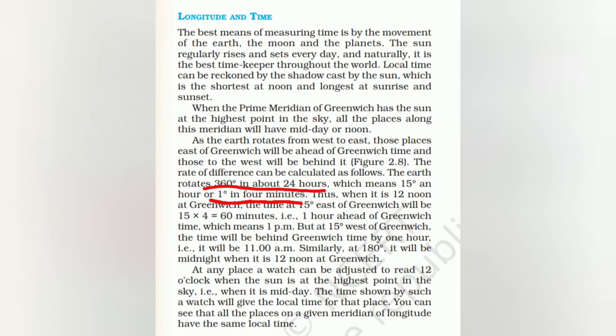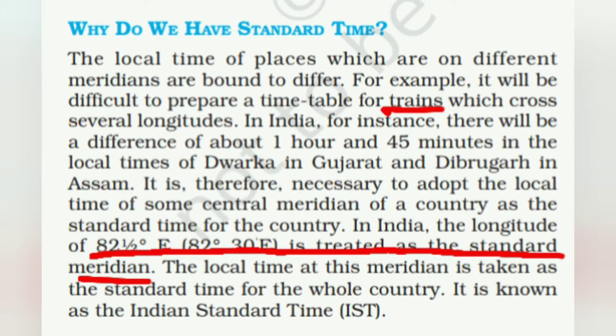For longitude: Earth takes 360 degrees in about 24 hours, so one degree equals four minutes. If you move east from the Greenwich meridian (zero degrees), you gain time; moving west, you lose time. India has 82 degrees 30 minutes East as its standard meridian. A single standard time is necessary because a country works as a single unit — one government, one system. So Indian Standard Time is 82 degrees 30 minutes East.